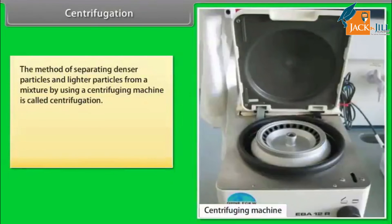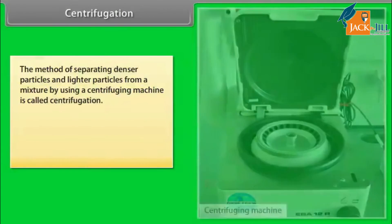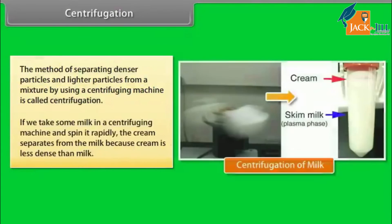Centrifugation: The method of separating denser particles and lighter particles from a mixture by using a centrifuging machine is called centrifugation. For example, if we take some milk in a centrifuging machine and spin it rapidly, the cream separates from the milk because cream is less dense than milk.